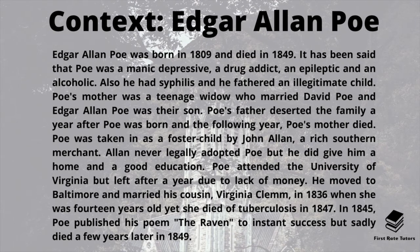Edgar Allan Poe's mother was a teenage widow who married David Poe, and Edgar Allan Poe was their son. Poe's father deserted the family a year before he was born, and the following year Poe's mother died. He was taken in as a foster child by John Allan, a rich southern merchant, who never legally adopted Poe but gave him a home and a good education. Poe attended the University of Virginia but left after a year due to lack of money.